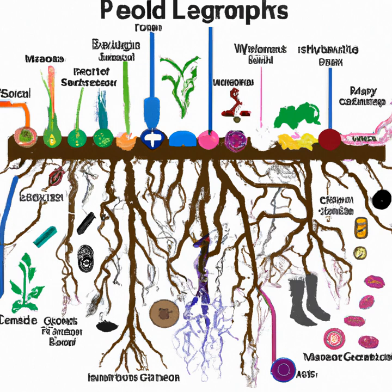Soil fertility is defined as the ability of the soil to provide the necessary environmental conditions for the growth of plants. Soil fertility is essential for the growth of crops, and it is the key to ensuring a good harvest. Soil fertility is influenced by many factors such as soil structure, nutrient content, and pH levels.